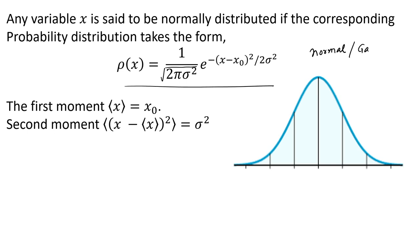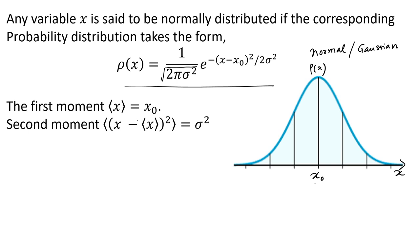The normal or Gaussian distribution is often called a bell curve or bell-shaped curve. The mean is at X equal to X₀. The distribution is peaked around X₀ and falls off symmetrically on both sides. The first moment of the distribution, which is the integral of X·ρ(X) from minus infinity to plus infinity, equals X₀.